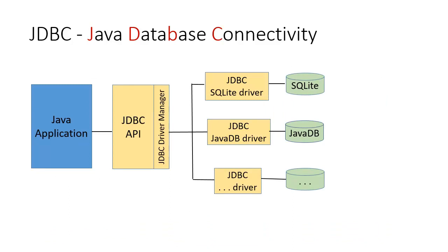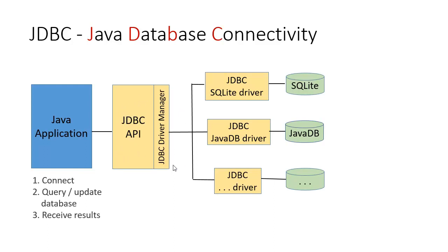This graphic gives you a bigger picture. You can see that we have the Java application on the left. That is where you write your own classes, and that's where you write the code to connect to a database, query, update databases, retrieve results. And you do that by using objects and methods from the JDBC API.